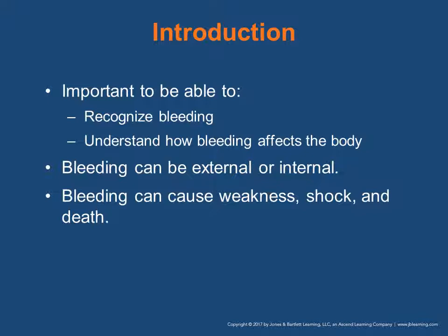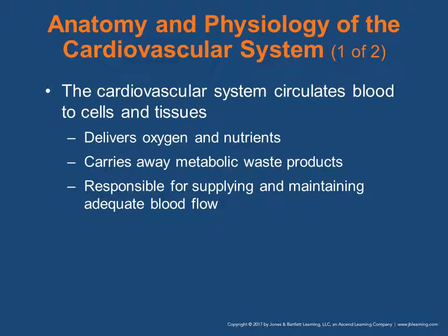Bleeding can be external or internal. It can cause weakness, shock, and death. The cardiovascular system circulates blood to cells and tissues, delivering oxygen and nutrients to the cells. Cellular metabolism is established and is essential for life. It carries away metabolic waste products from the cells, excreted either through the kidneys or through the respiratory system. The cardiovascular system is responsible for supplying and maintaining adequate blood flow and homeostasis within our bodies.